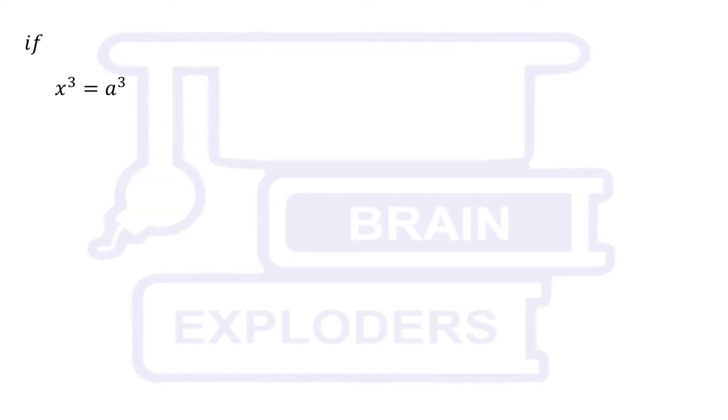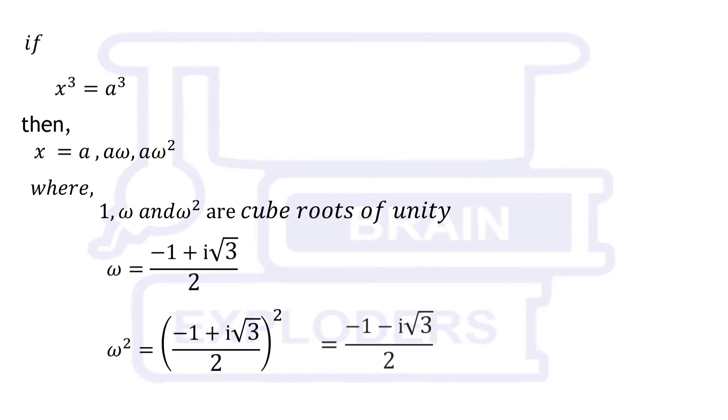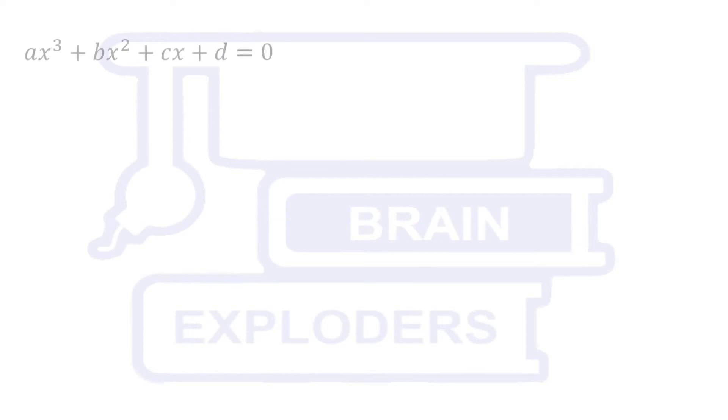Before start finding the roots of a general cubic equation, here is one more thing that we should know. Equation x cubed equals to a cubed has three roots: a, a omega and a omega squared, where omega and omega squared are imaginary cube roots of unity. Value of both of these are shown on the screen. Now come to the general cubic equation.